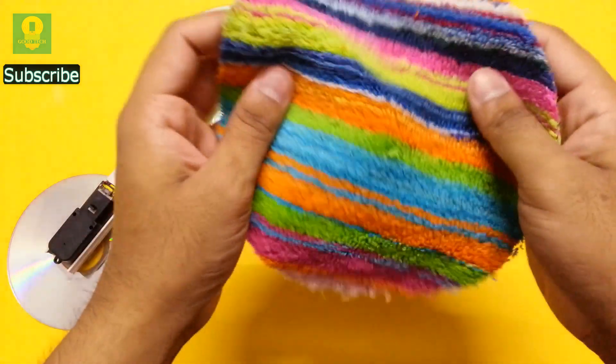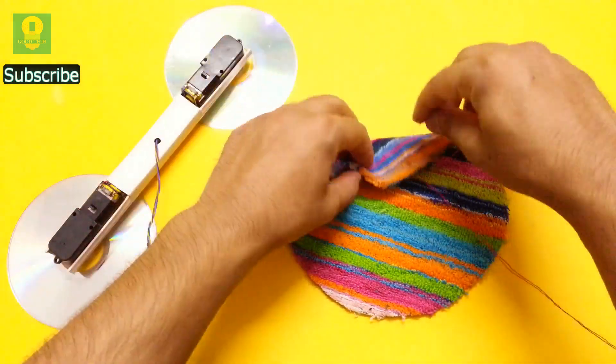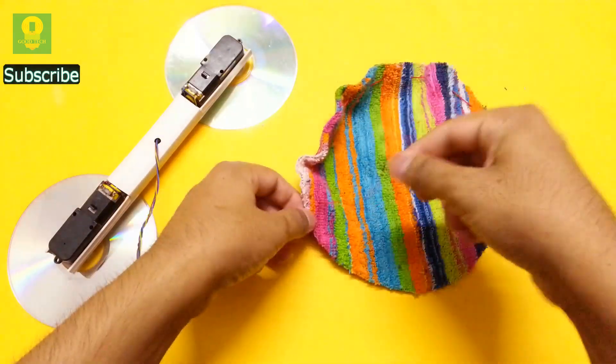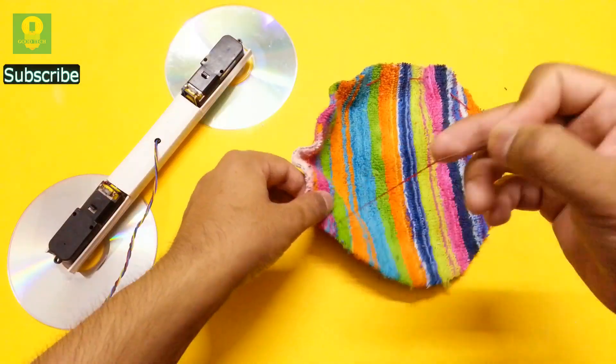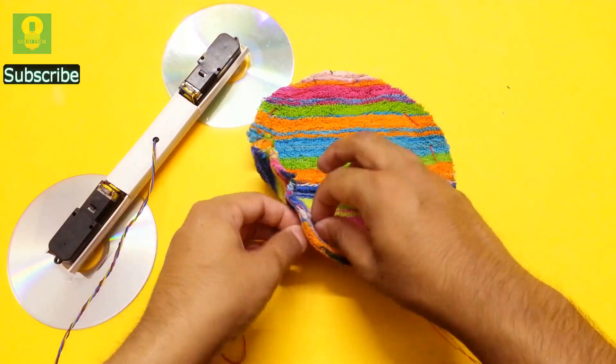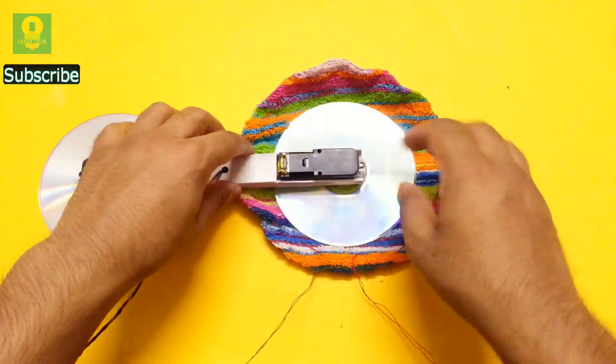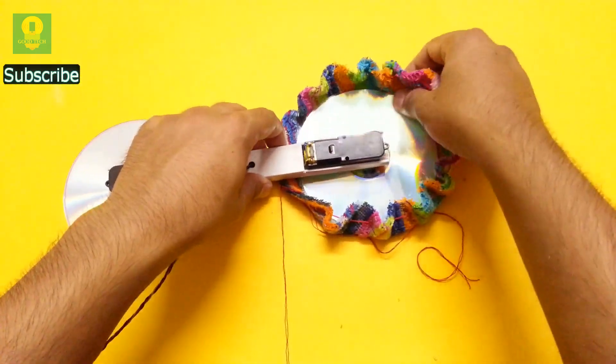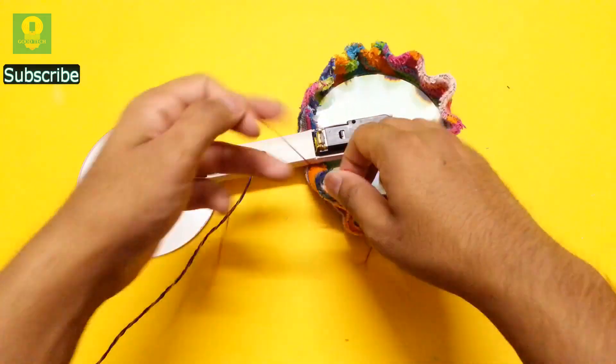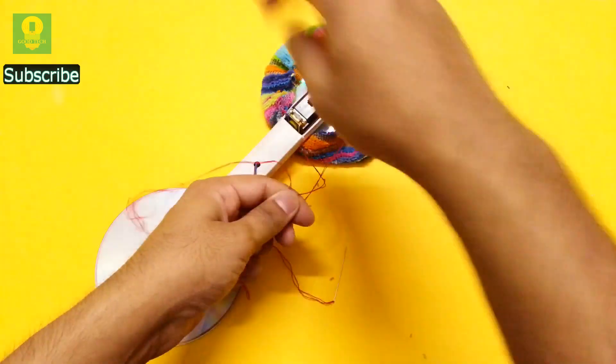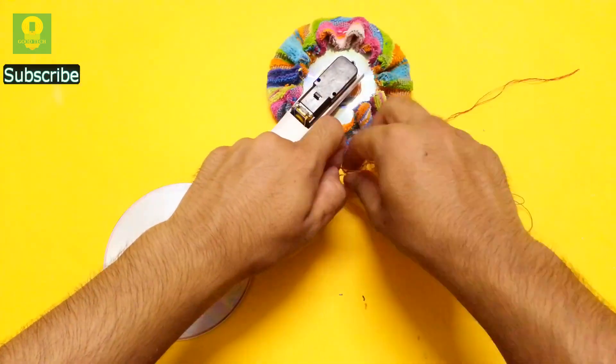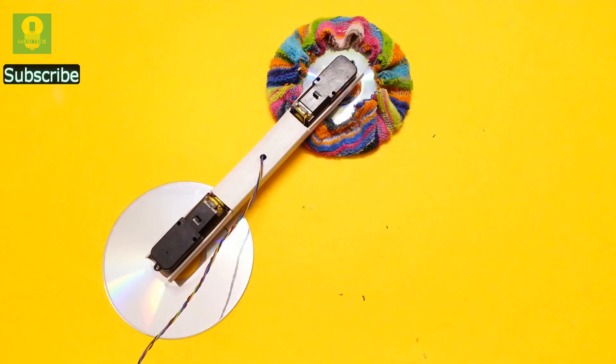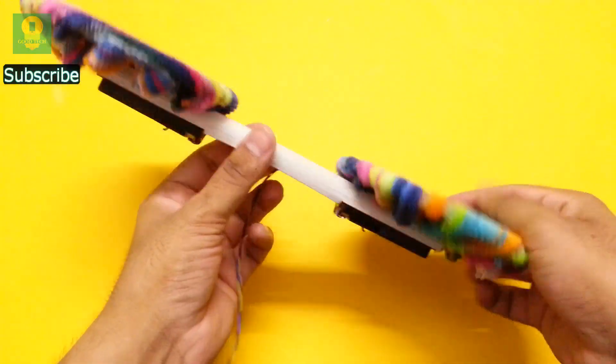Take a circular cloth and insert a thread around the edges using a needle. Place the CD at the center of the cloth. Pull the thread tightly to wrap the CD in the cloth. Repeat this step for other CDs as well.